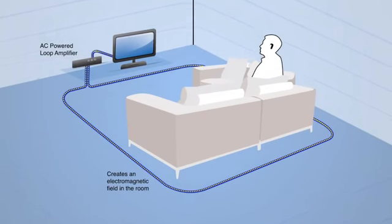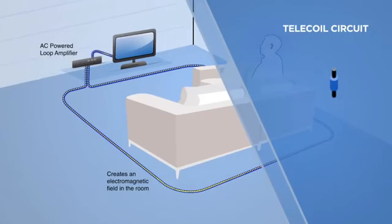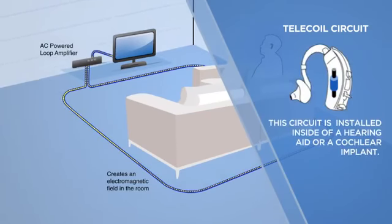This electromagnetic field induces an electrical current in a special circuit called a telecoil. A telecoil consists of copper wire wrapped around a small metal rod. This circuit is installed inside of a hearing aid or a cochlear implant.